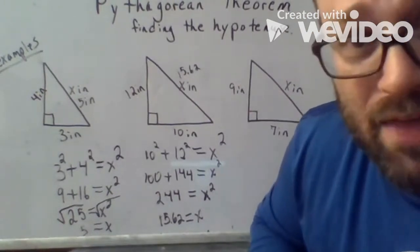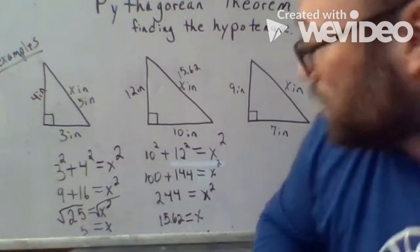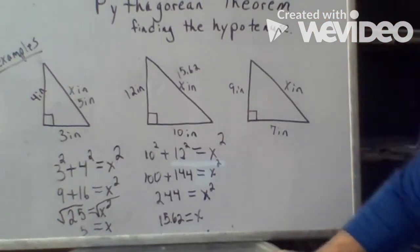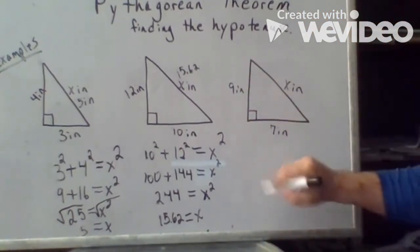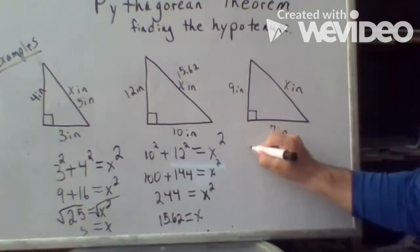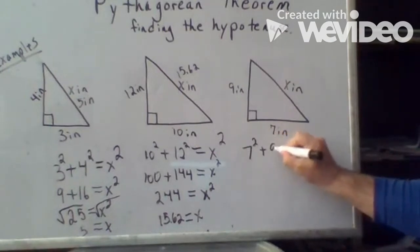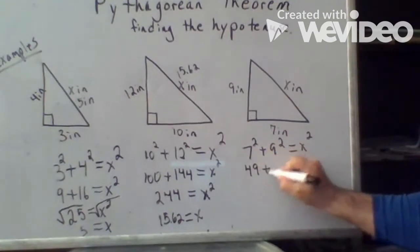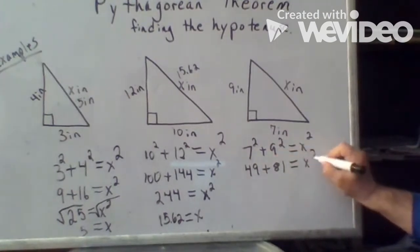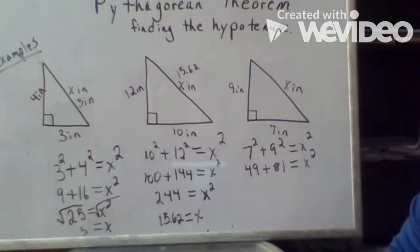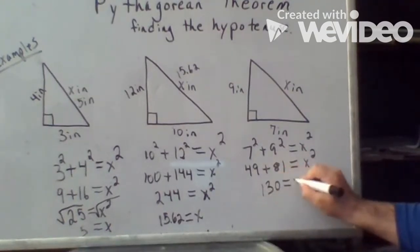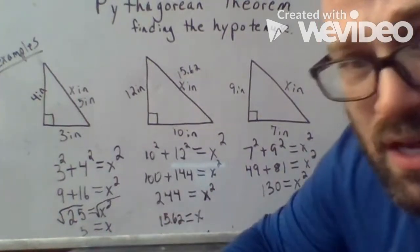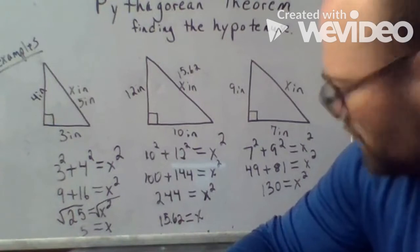Let's do one more example. And then you guys will have a few problems to do on your own for your EdPuzzle. This one has legs, seven inches and nine inches and x inches. So seven squared plus nine squared equals x squared. So we have 49 plus 81 equals x squared. So now you're going to add 81 plus 49. So 81 plus 49 gets us 130.